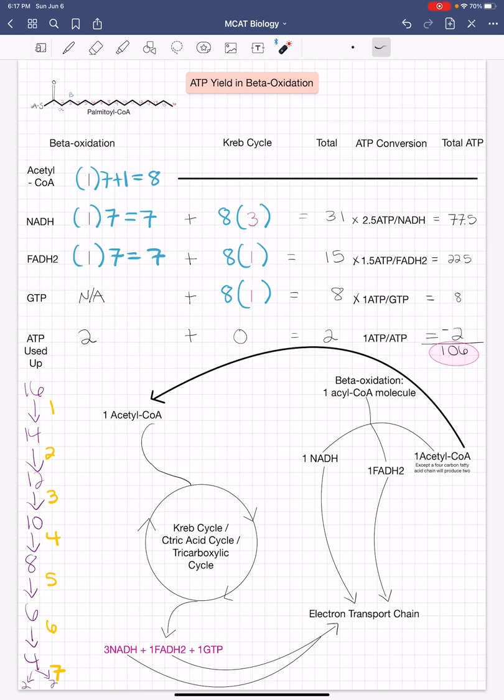Now, we need to convert these molecule numbers into ATP. And to do so, we need the following conversions. So for NADH, one molecule of NADH produces 2.5 molecules of ATP.